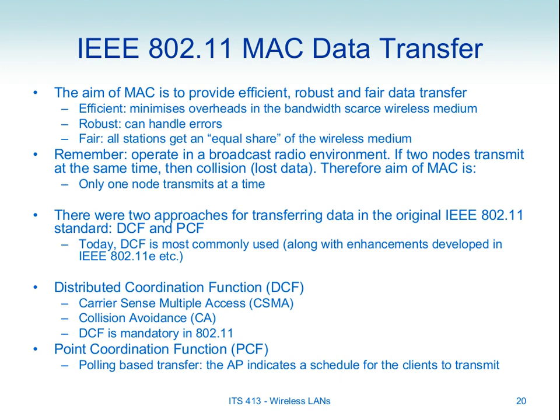PCF, in simple terms, is a polling-based system. The access point says this client can send, then another client can send. Since it's controlled by one central device, the access point can set up a schedule so no two clients are sending at the same time. A client only transmits when the access point tells it to, so no two clients transmit simultaneously. It's more complex than DCF, and hence wasn't implemented in most early devices.